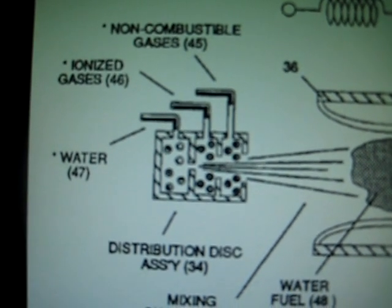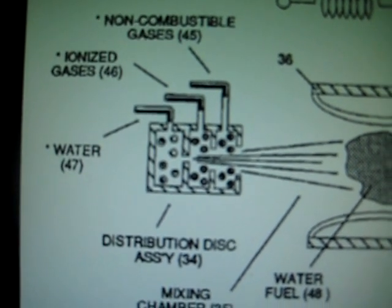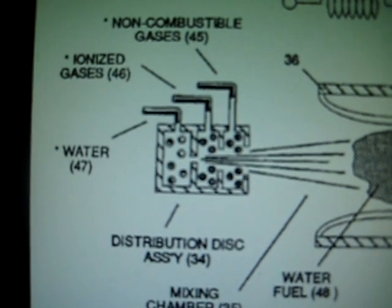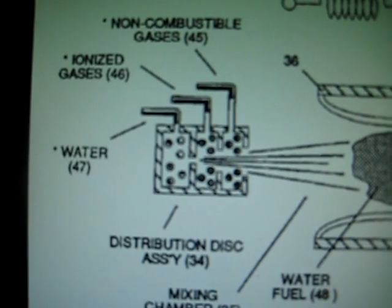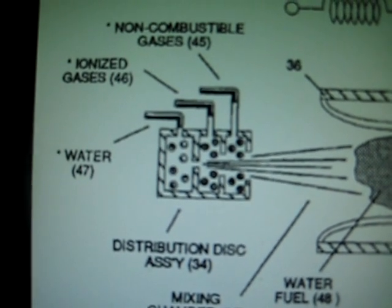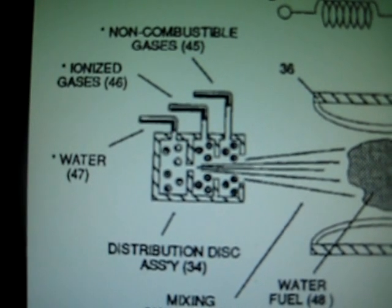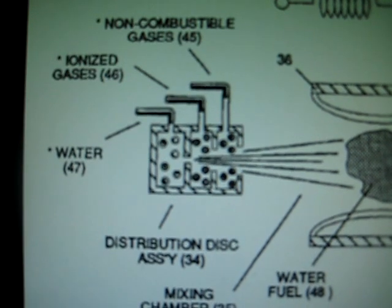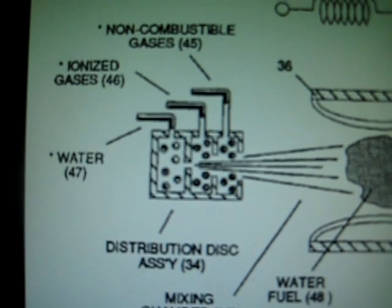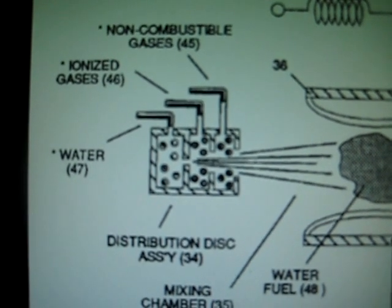Basically what this tells me is that he limits the amount of water that flows in through the mixture, limits the amount of ionized gas that flows in, and limits the amount of non-combustible gases. It's kind of a process of having exact measurements come out the way that they're supposed to to make the whole process work correctly.